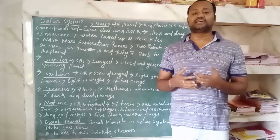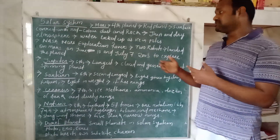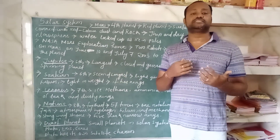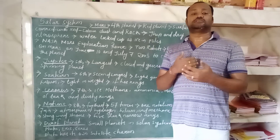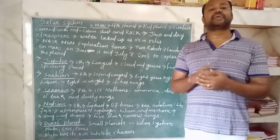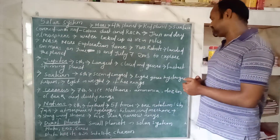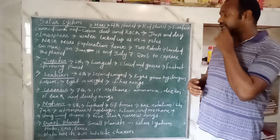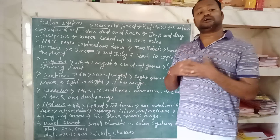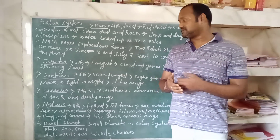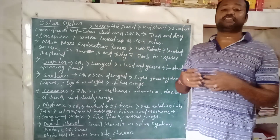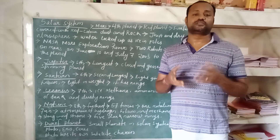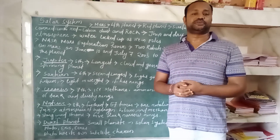Jupiter has the highest number of satellites. Now let's discuss about Saturn. Saturn is the sixth planet in the solar system and the second largest planet. It is made up of light gases like hydrogen, helium, and other gases. It is light in weight, and most importantly it has a ring. Saturn is known as the most beautiful planet in the solar system.